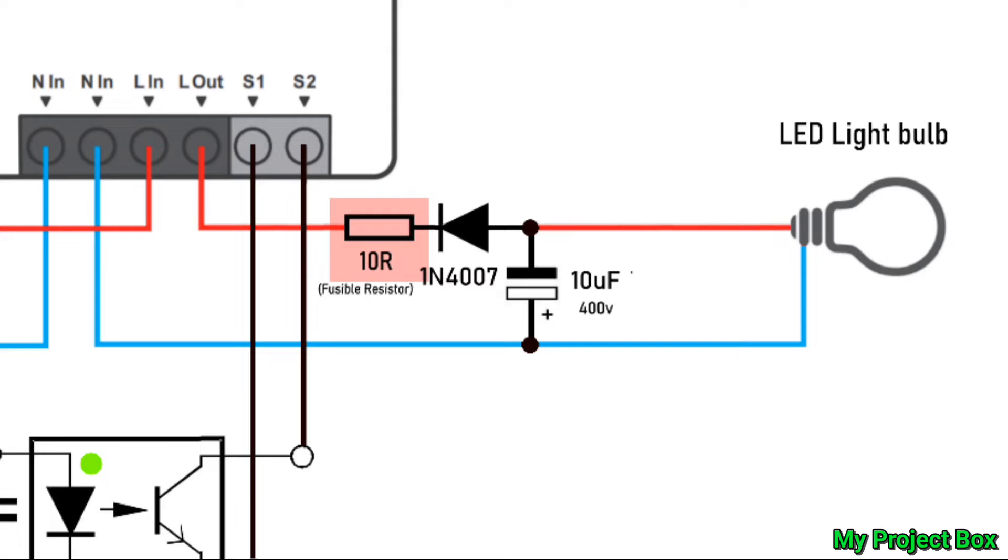I've also added a 10 ohm fusible resistor so that if the electrolytic capacitor goes faulty it can open up like a fuse. And it also acts as an in-rush limiter so that the in-rush current is reduced as that capacitor charges up.